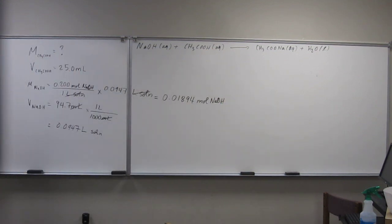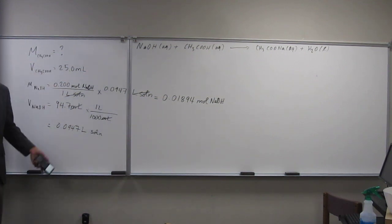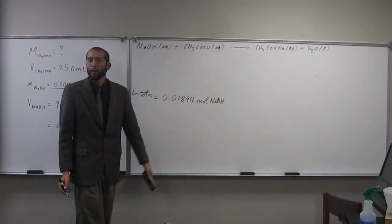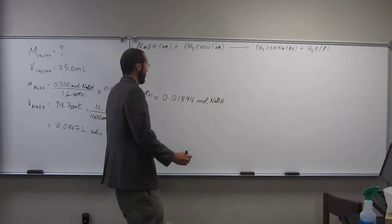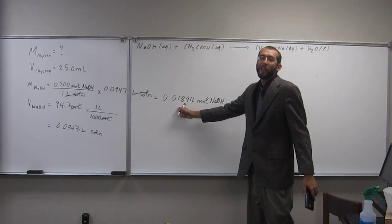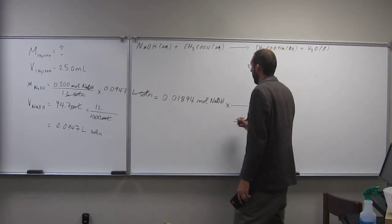So that's moles of NaOH, right? That's not what we want though. We want to figure out how many moles of acetic acid we have. But what do we know about the mole-to-mole ratio of acetic acid to NaOH? One to one. So it actually is the same amount of moles. But let's just convert it.